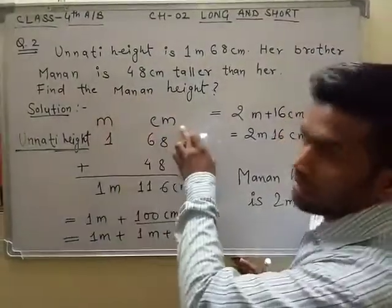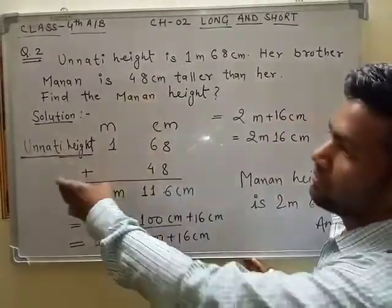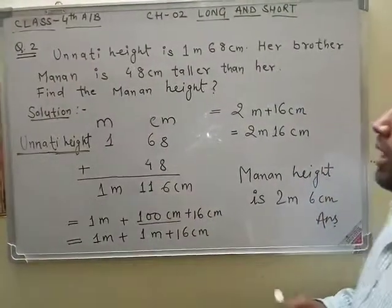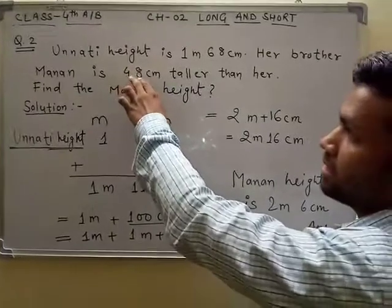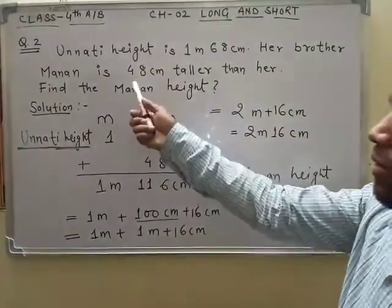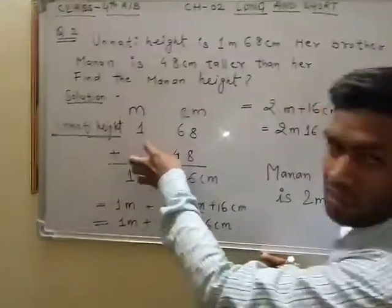there is meter and there is centimeter. As our question is given the height of Unnati, 1 meter 68 centimeter, it is telling that 68 centimeter taller than, Manan height is 48 centimeter taller than, so we can add them in Unnati height.